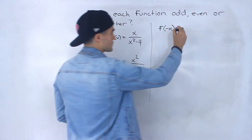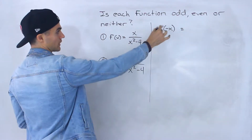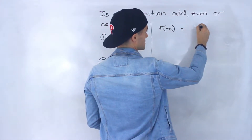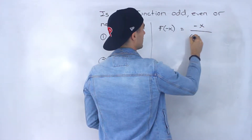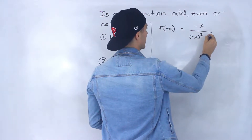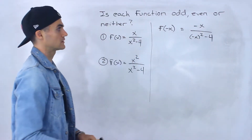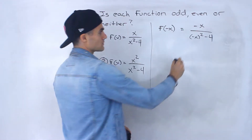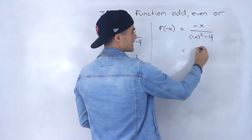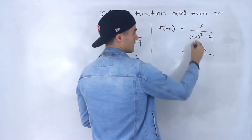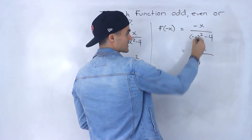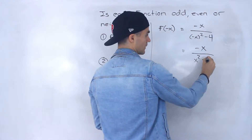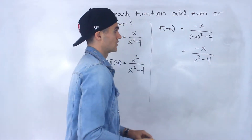Starting with the first function, we're going to plug in negative x for all the x's. So we'll have negative x up top over negative x squared minus 4. What we end up with is negative x at the top still, and then negative x squared — that's going to end up being positive x squared — and then minus 4.